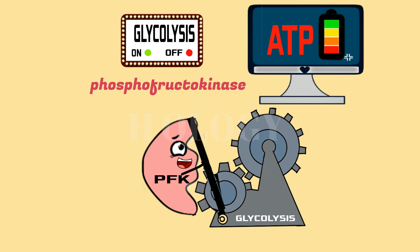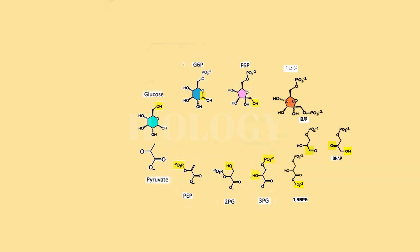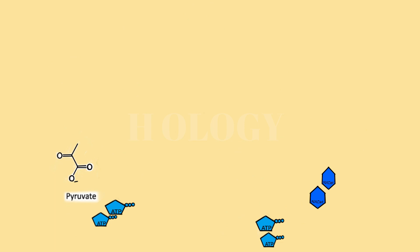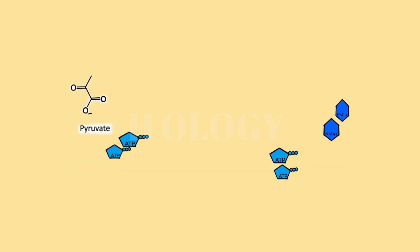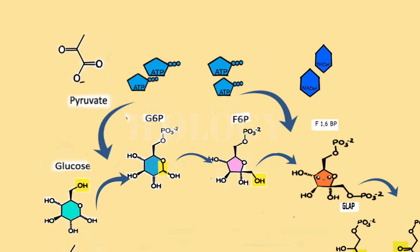The end products of glycolysis are two molecules of pyruvate, two molecules of ATP, and two molecules of NADH. Although four ATP molecules are produced in the second half, the net gain of glycolysis is only two ATP because two ATP molecules are used in the first half of glycolysis.